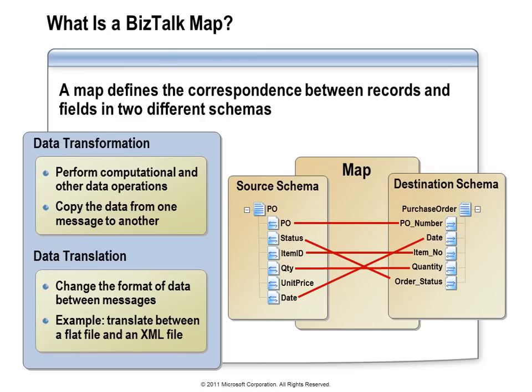A map is ultimately an XSL transformation. You'll use the BizTalk mapper to create links between fields, but the needs of any application could be more complex. For example, if the status code in the source message is not a valid status code in the destination message, you'd need a lookup. Or if the destination system doesn't understand the date format in the source message, you'd need string manipulation to convert the date. Another example: if the destination requires item numbers in all caps but the source has no such requirement, the map needs to handle that conversion.